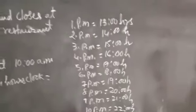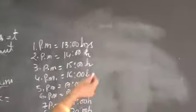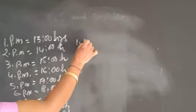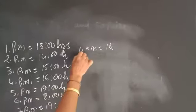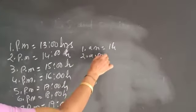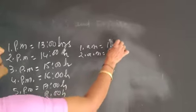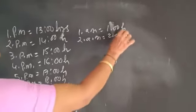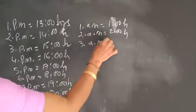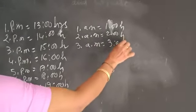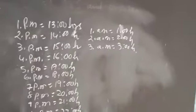This is how you change. AM times will not change. 1 am is 1 hour only, 2 am means 2 hours — it will not change, same. Only PM will change in 24-hour clock.